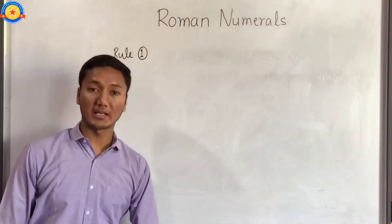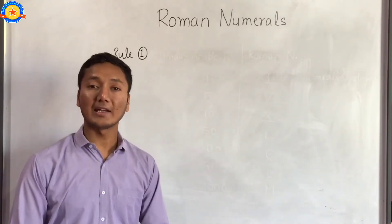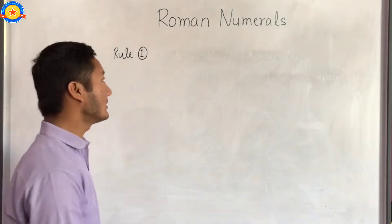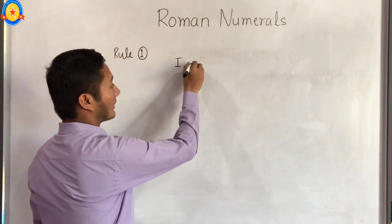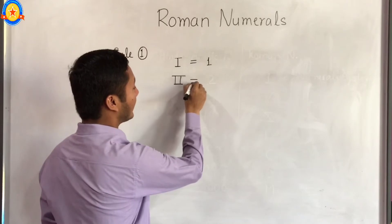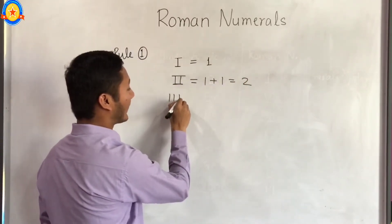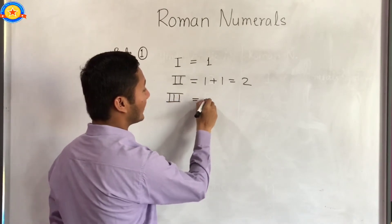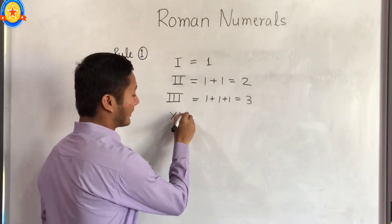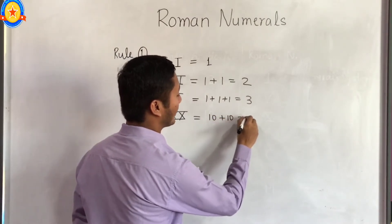Rule number 1 says: if a symbol is repeated, then its value is added as many times as it occurs. That means if we write I, it becomes 1. If we write II, its value will be 1 plus 1 equals 2. If we write III, its value will be 1 plus 1 plus 1 equals 3. If we write XX, its value is 10 plus 10 equals 20.